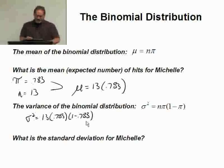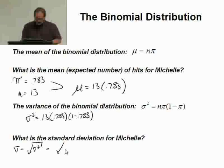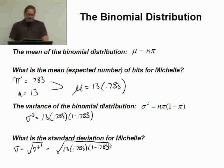Now, what's the standard deviation? The standard deviation is simply sigma, which equals the square root of sigma squared, which should be the square root of 13 times 0.783, times 1 minus 0.783. Now, let's go to calculator and actually push a few buttons and see what we get.